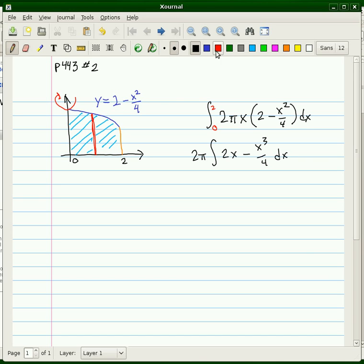We're going from 0 to 2 on the x-axis. Well, we can simply do the antiderivative here. The antiderivative of 2x is x squared, and the antiderivative of x cubed over 4 is x to the 4th over 16.